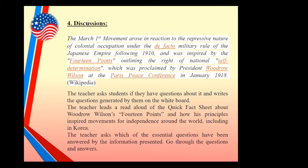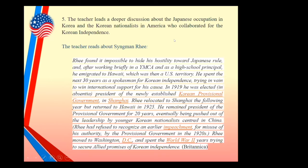Have a deeper discussion with students about the March 1st movement and the 14 Points, outlining the right of national self-determination proclaimed by President Woodrow Wilson — this information can also be found in Wikipedia. Then have a deeper discussion about the Japanese occupation in Korea and the Korean nationalists in America, such as Seung Man Lee — what he did that was significant to help Korea be liberated from Japan, and how he started anew with a new government.